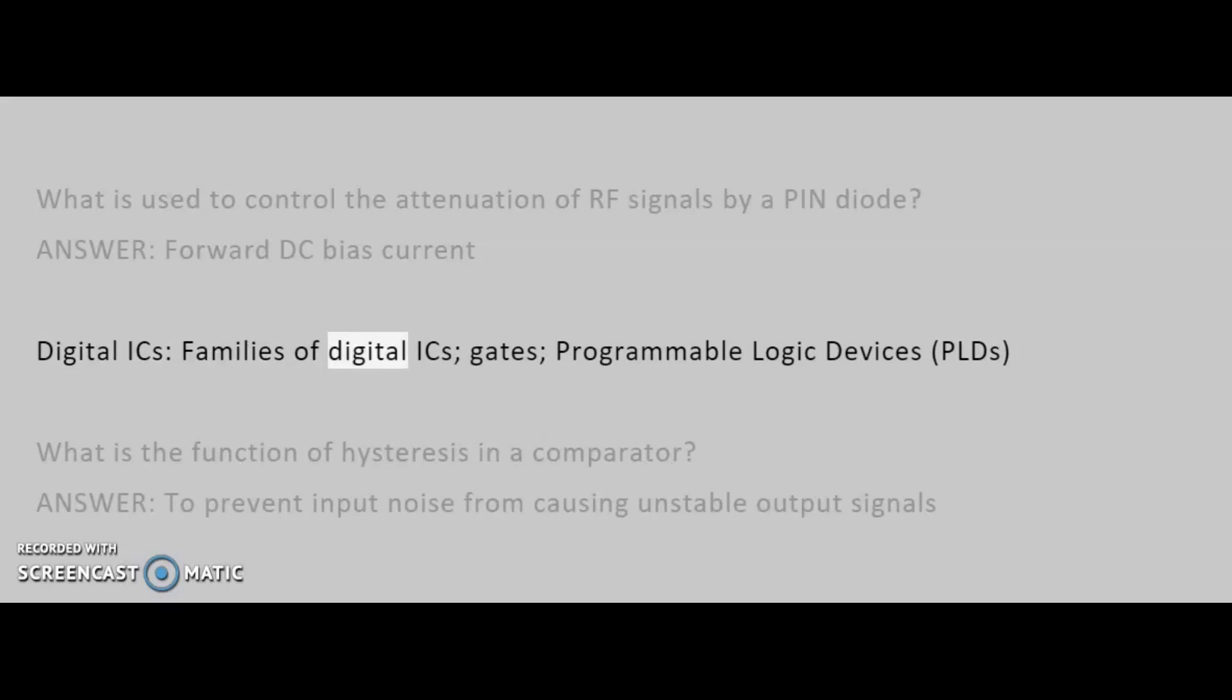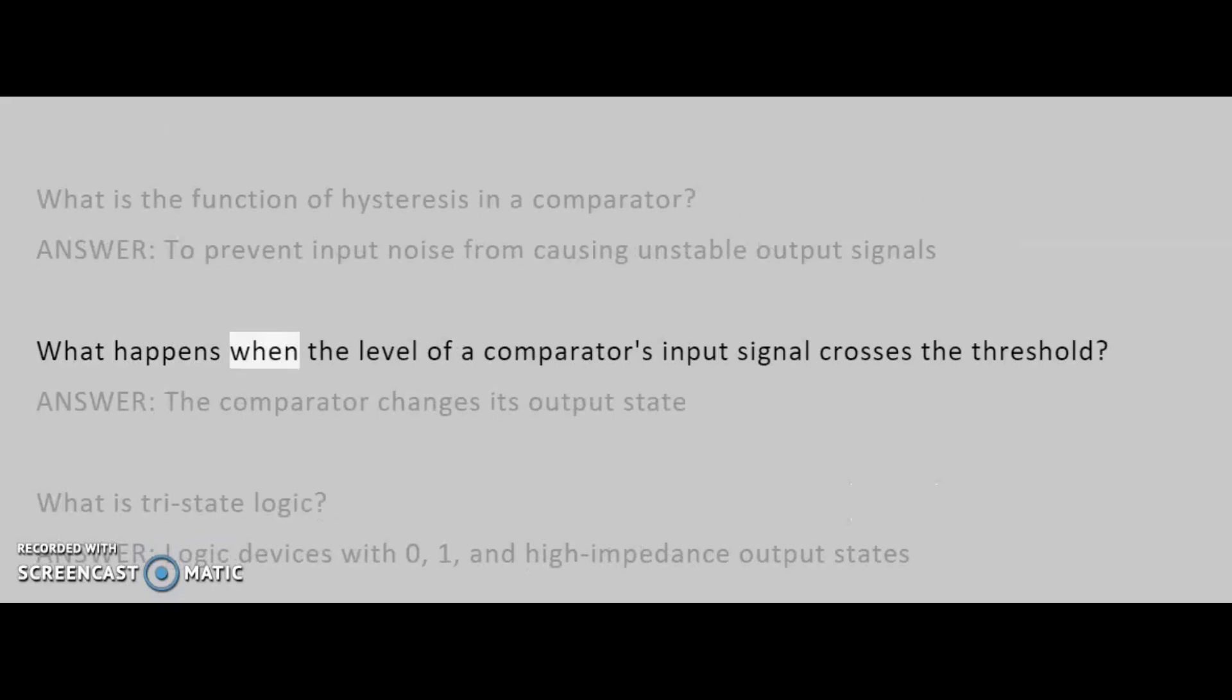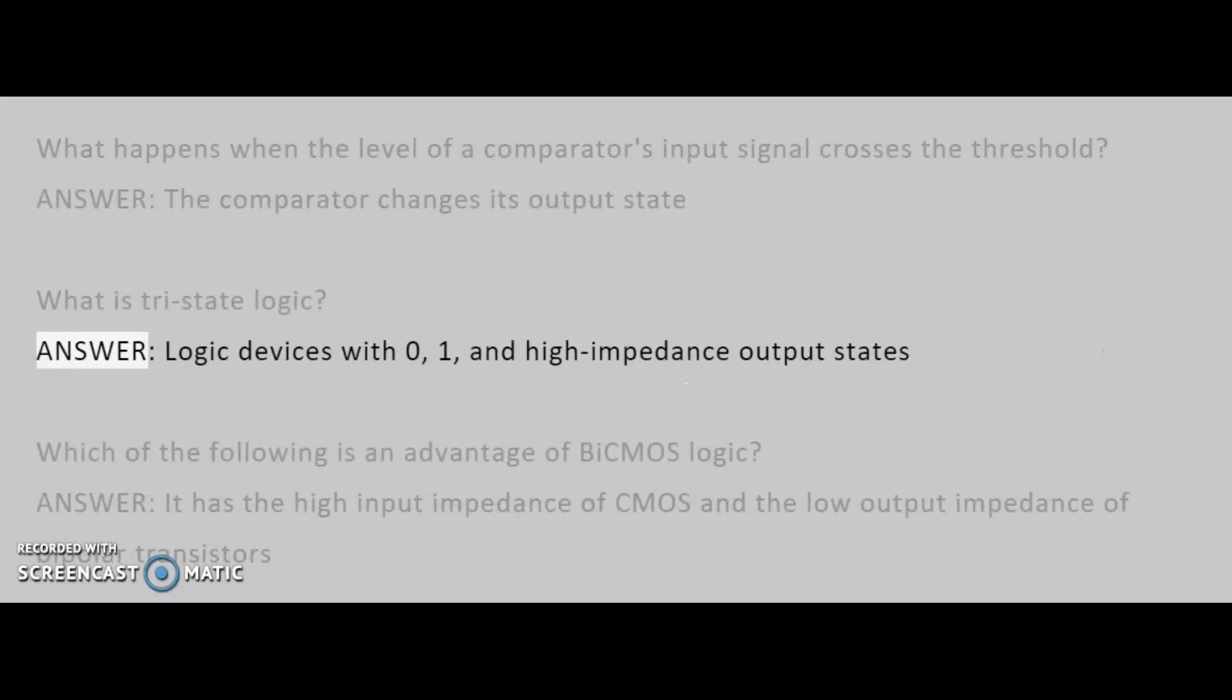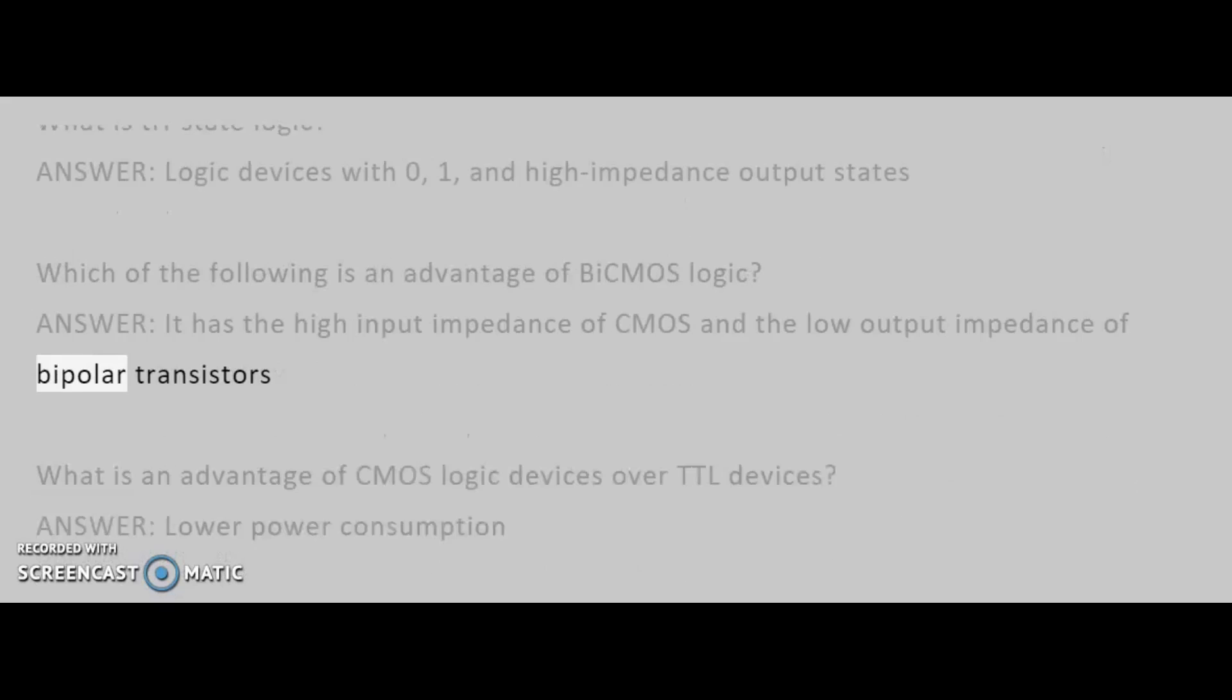Digital ICs, families of digital ICs, gates, programmable logic devices, PLDs. What is the function of hysteresis in a comparator? Answer: to prevent input noise from causing unstable output signals. What happens when the level of a comparator's input signal crosses the threshold? Answer: the comparator changes its output state. What is tri-state logic? Answer: logic devices with 0, 1, and high impedance output states. Which of the following is an advantage of bi-CMOS logic? Answer: it has the high input impedance of CMOS, and the low output impedance of bipolar transistors.